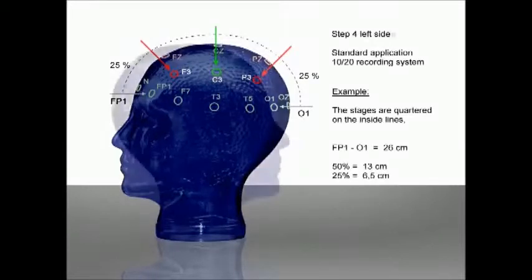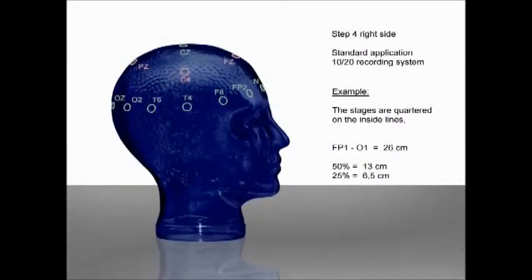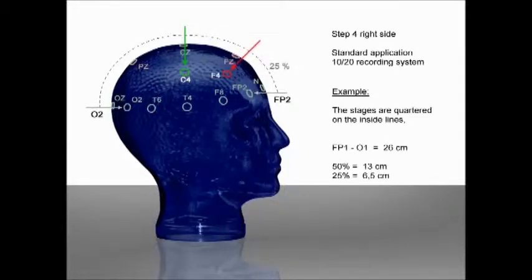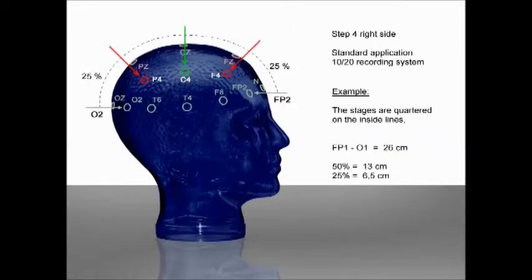We will now determine the points for the right side of the head. Measure the distance from Fp2 to O2 over the existing C4 intermediate mark — in our example also 26 cm. Make the final mark for C4 at the halfway point (13 cm). Mark F4 at one quarter of the distance (6.5 cm) from Fp2, and mark P4 at one quarter (6.5 cm) from O2.